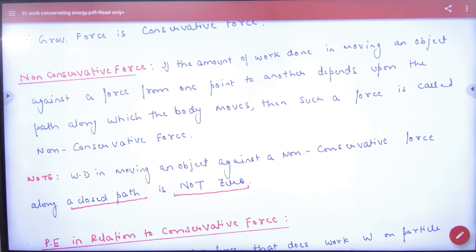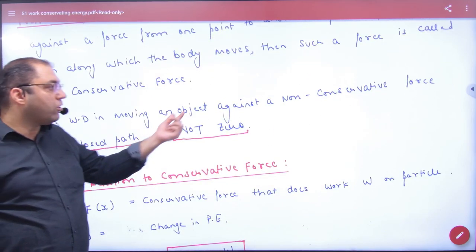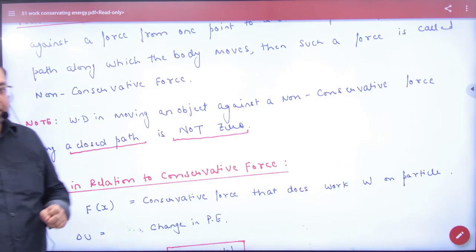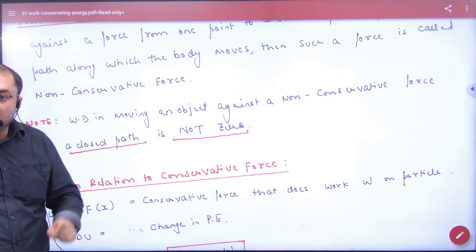Is this also clear? So in this case, note: work done in moving an object against a non-conservative force, example friction, along a closed path is not zero.